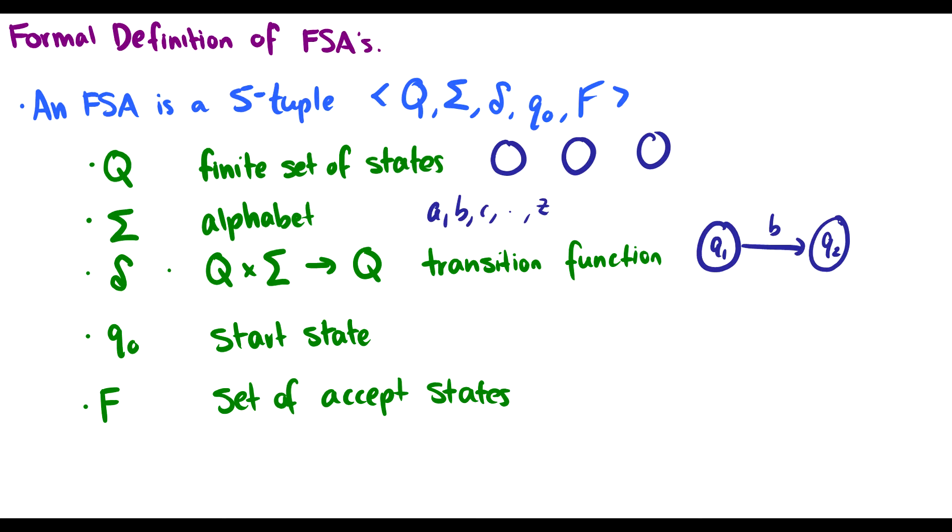We have Q0, which is the start state. This might be labeled as Q1, Q2, whatever. I just use Q0 as the default start state. And then we have a set F, which is a subset of all of our states and it is the set of accept states.